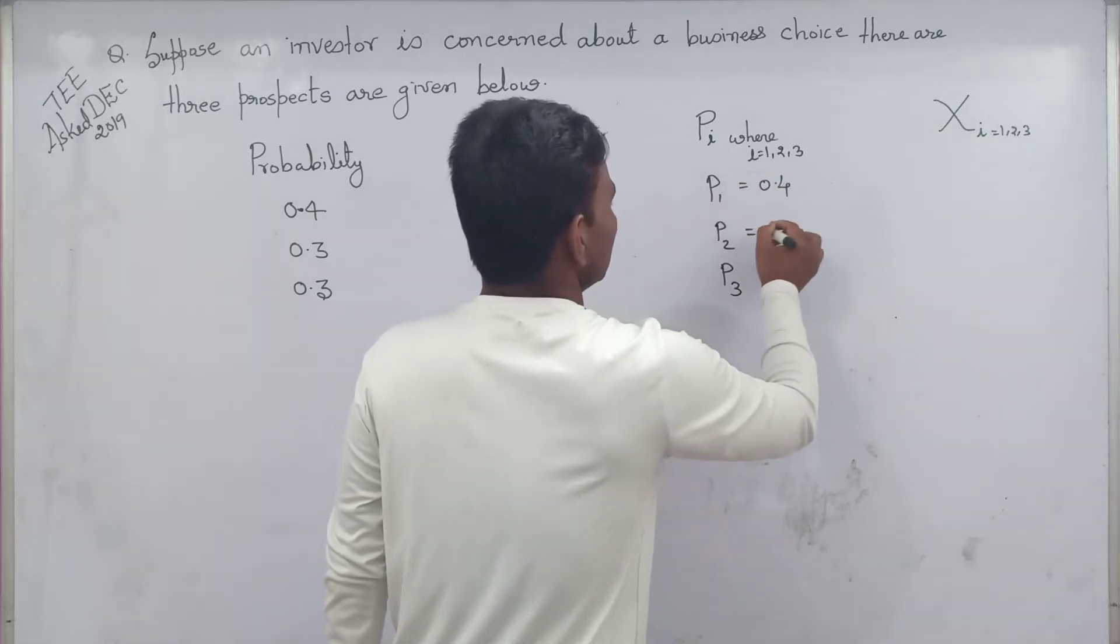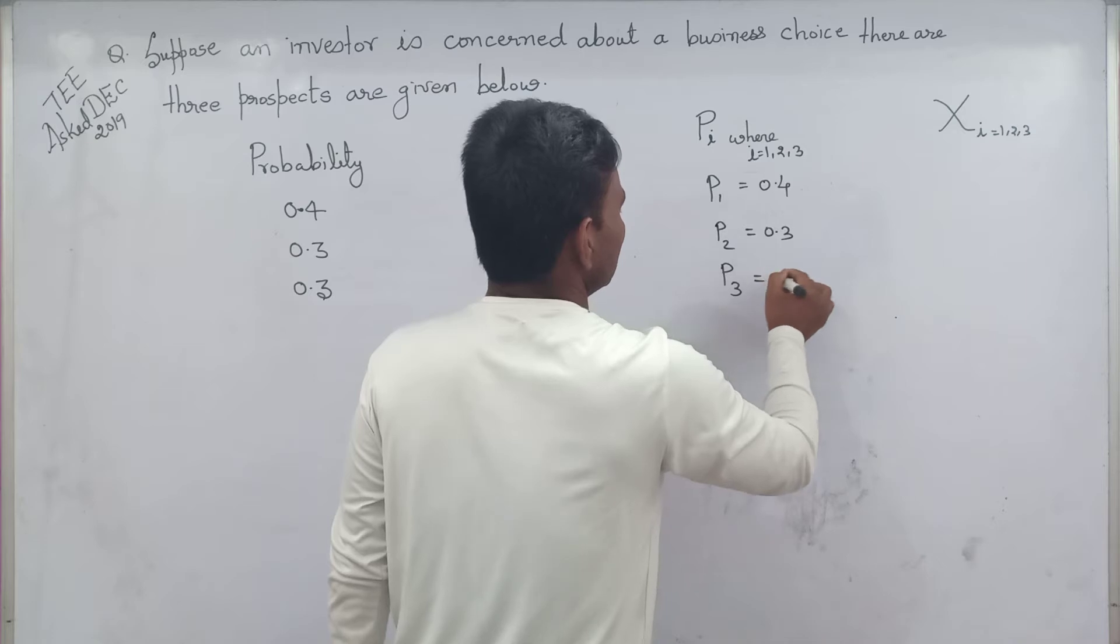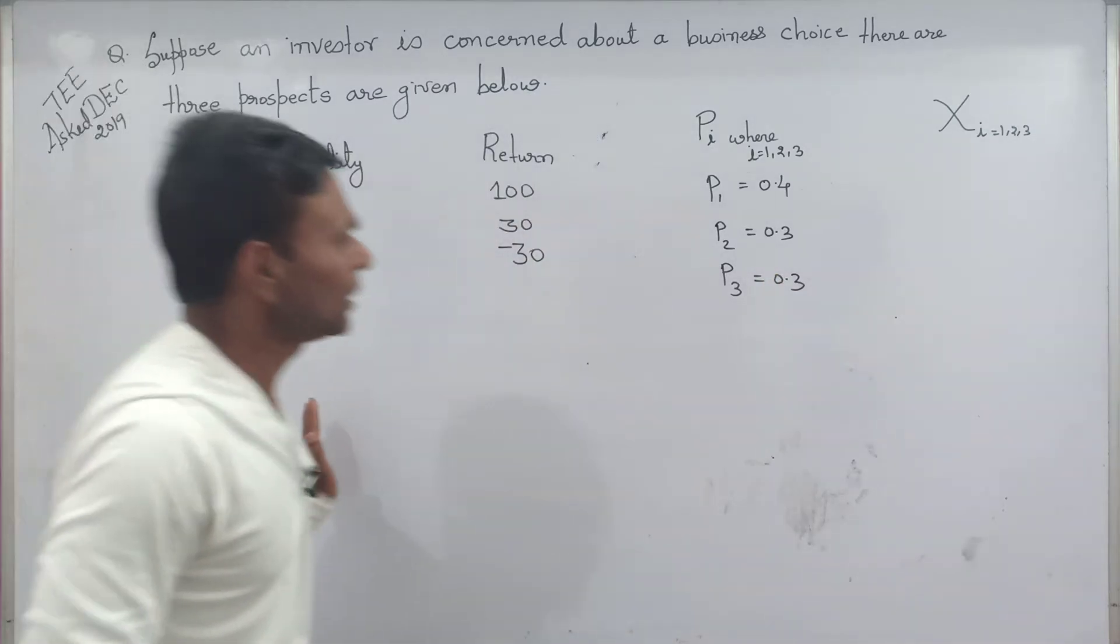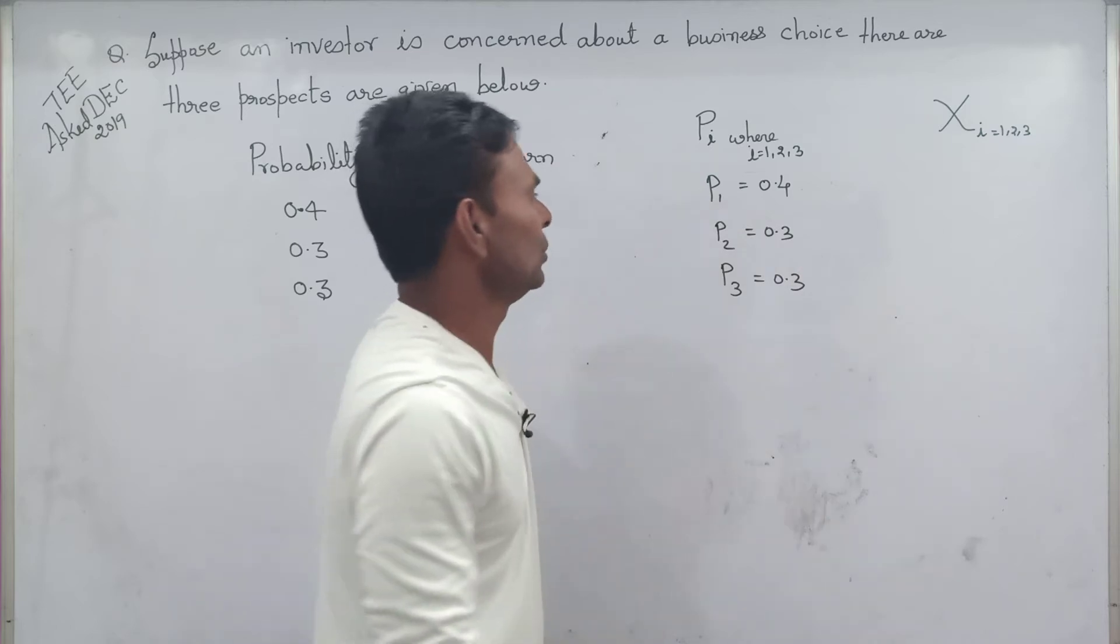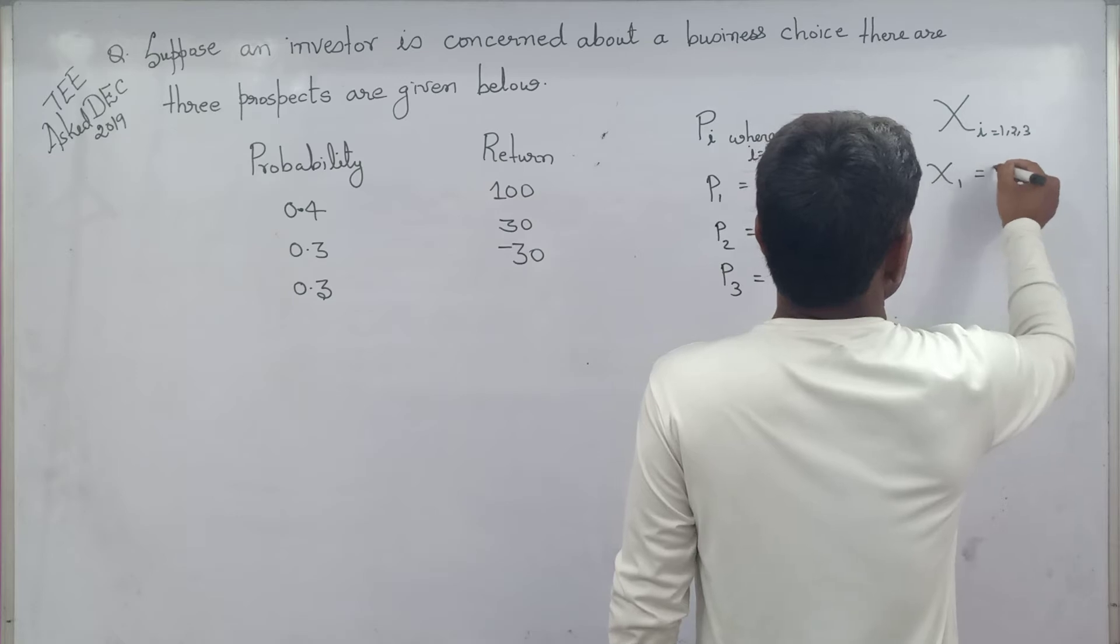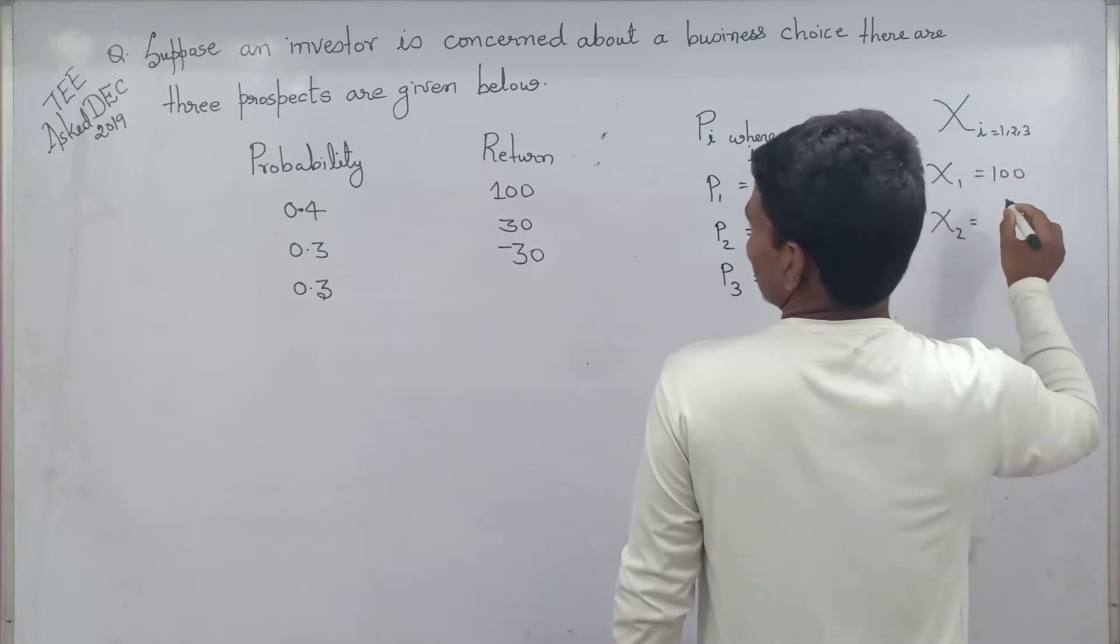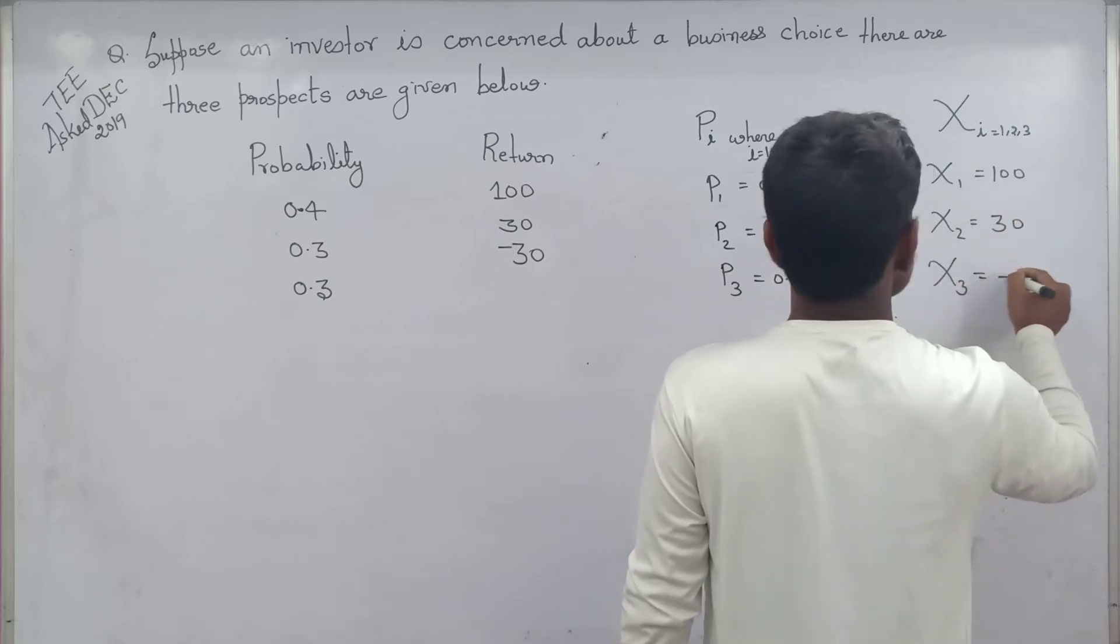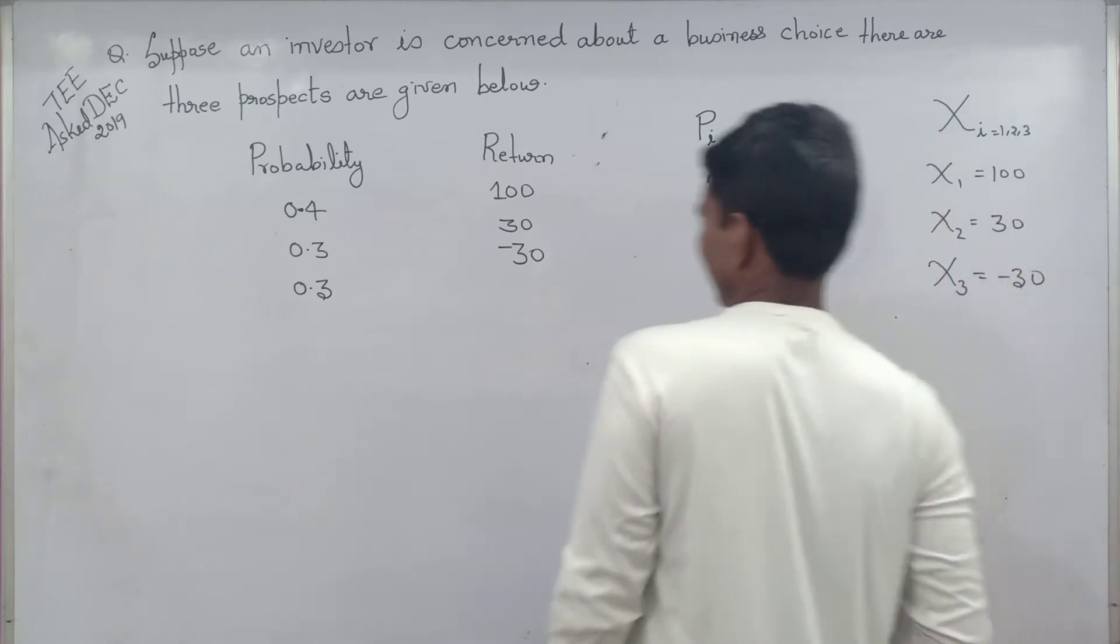This is probability and their corresponding x value, which is the return, x1 equal to 100, x2 equal to 30, and finally x3 equal to minus 30.